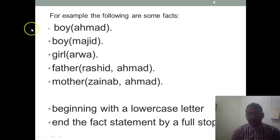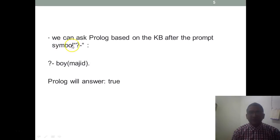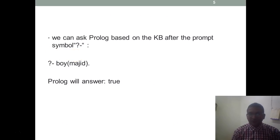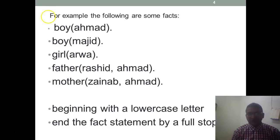So once you have created the knowledge base, then we can ask queries. You can ask Prolog based on the knowledge base after the prompt symbol. For example, if you ask a query boy(majid), that means is Majid a boy, so based on the given facts you will get the answer true. Similarly, if I ask based on the given facts, is Rahima a girl? If you look at this knowledge base, there is no information about Rahima, so Prolog will return the answer false.